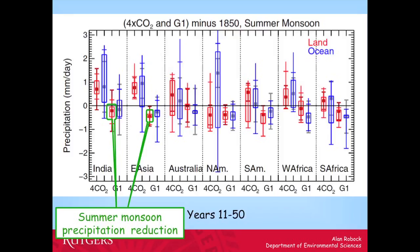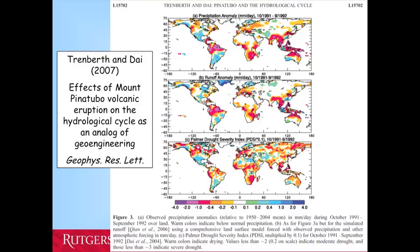We also looked at impacts on precipitation. If you look at monsoon regions — where most precipitation comes in one season — particularly India and China with a strong summer monsoon: if you cool the Earth, the land cools more than the ocean, and it's this temperature difference that drives the monsoon. So you'd actually have weaker monsoons. GeoMIP model results show that monsoon precipitation in India and East Asia would go down. We can use volcanoes as an analog — after the Mount Pinatubo eruption in 1991, there was indeed a reduction of precipitation over India, China, and the Amazon.